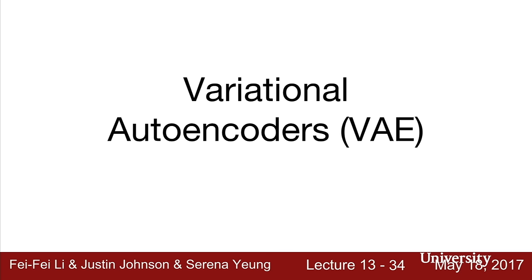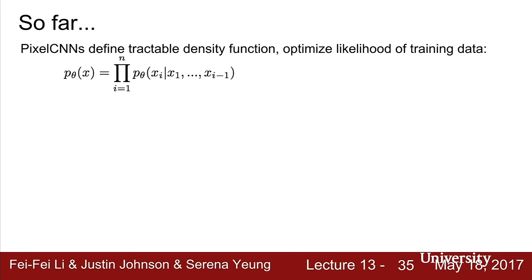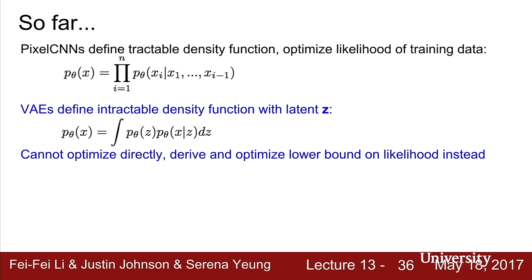Now we'll talk about variational autoencoders. PixelCNNs defined a tractable density function that we can directly optimize. With variational autoencoders, we define an intractable density function modeled with an additional latent variable Z. Our data likelihood P(X) now requires an integral over all possible values of Z, which cannot be optimized directly. Instead, we derive and optimize a lower bound on the likelihood. Z is a latent variable, which we'll cover in more detail.